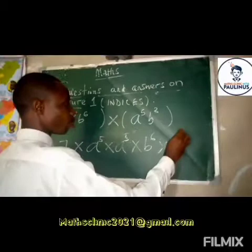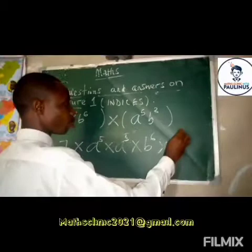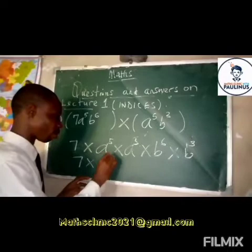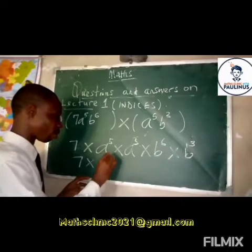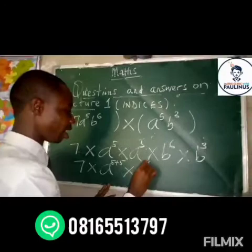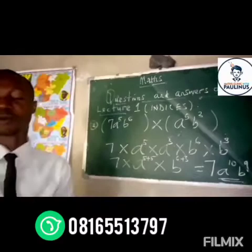We have b raised to power six and b raised to power three. We apply the law: pick one a and add up the power — five plus five. We also pick one b and add up the power — six plus three. Clearly my answer is going to be 7a raised to power ten, b raised to power nine.